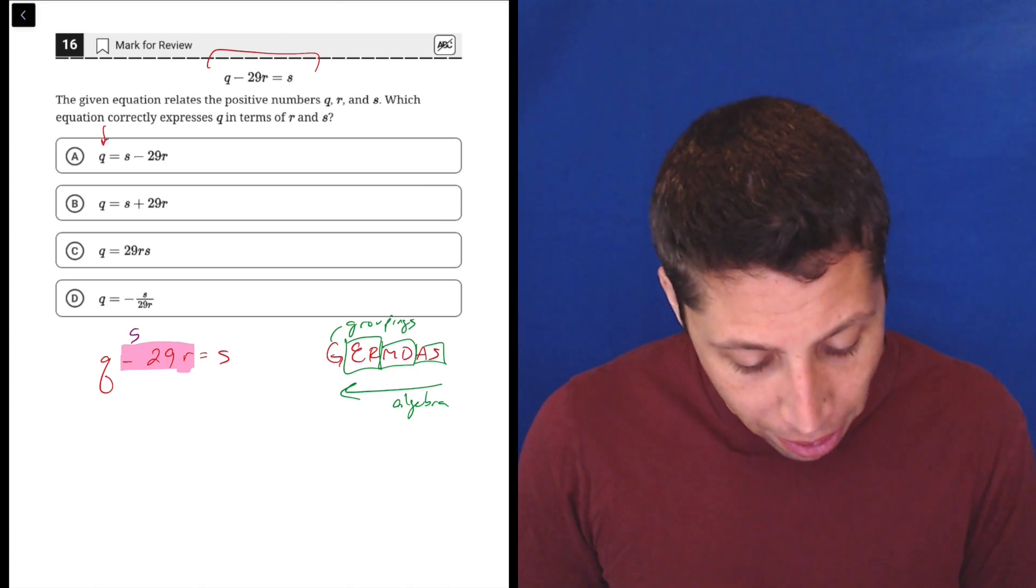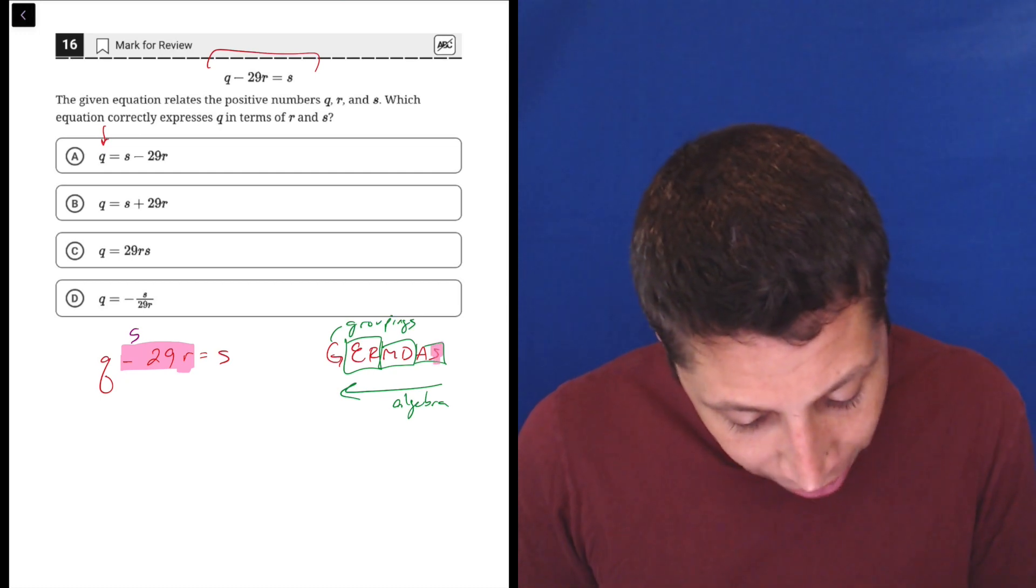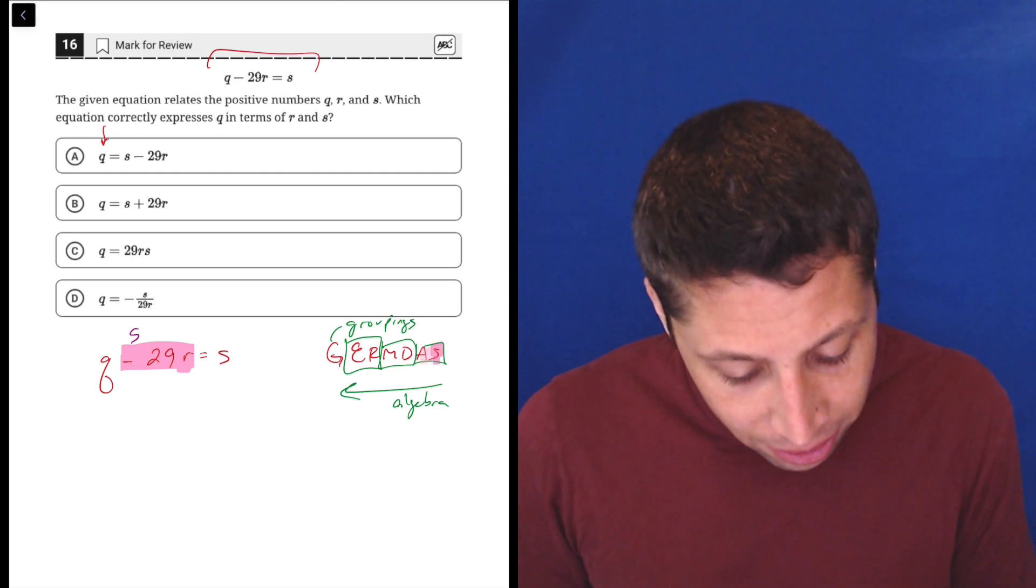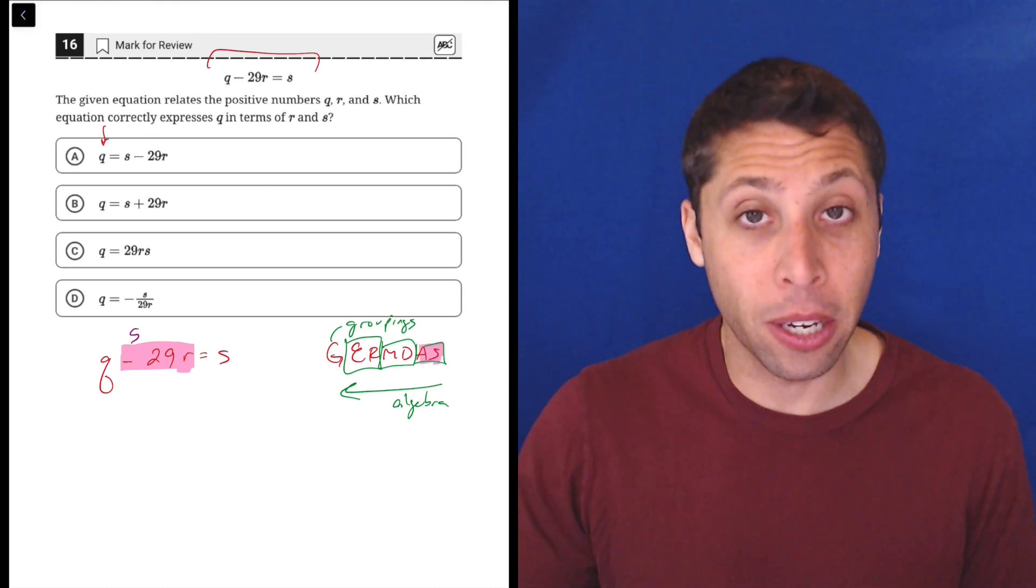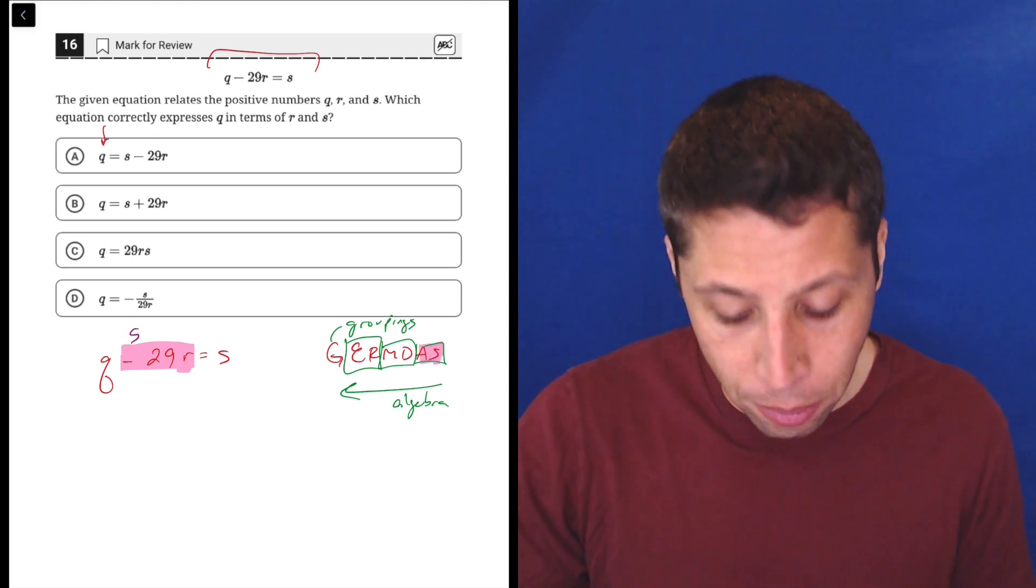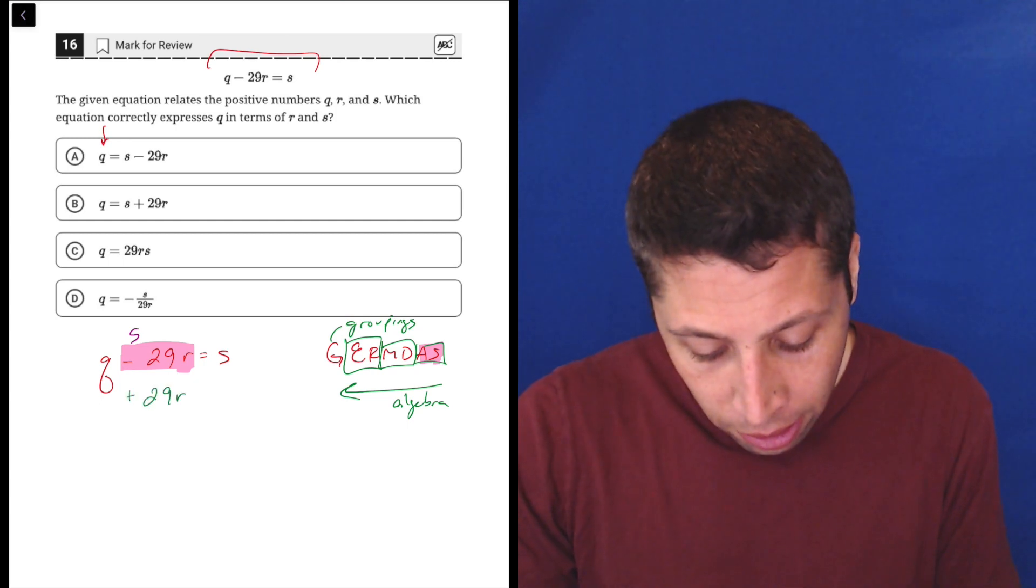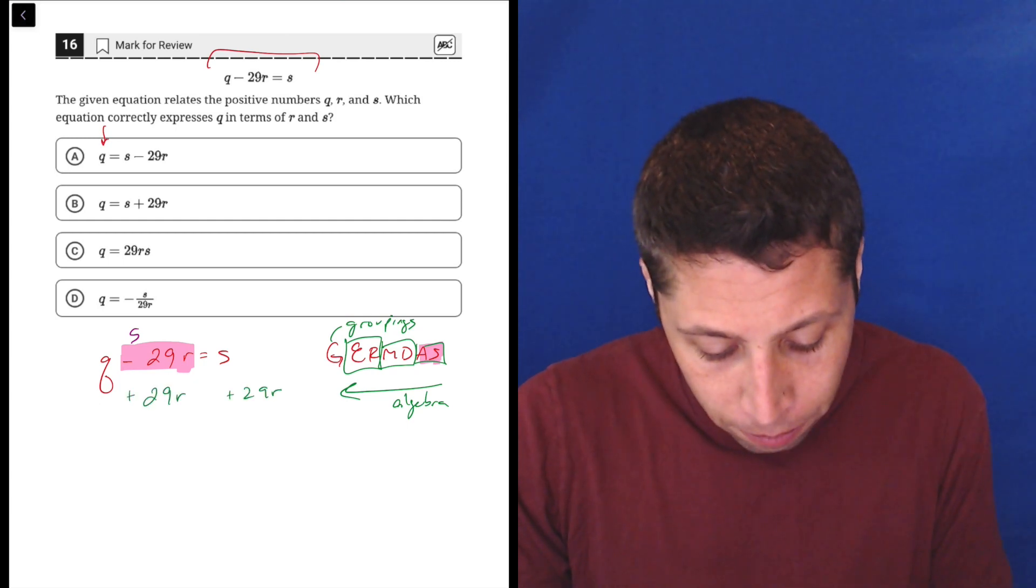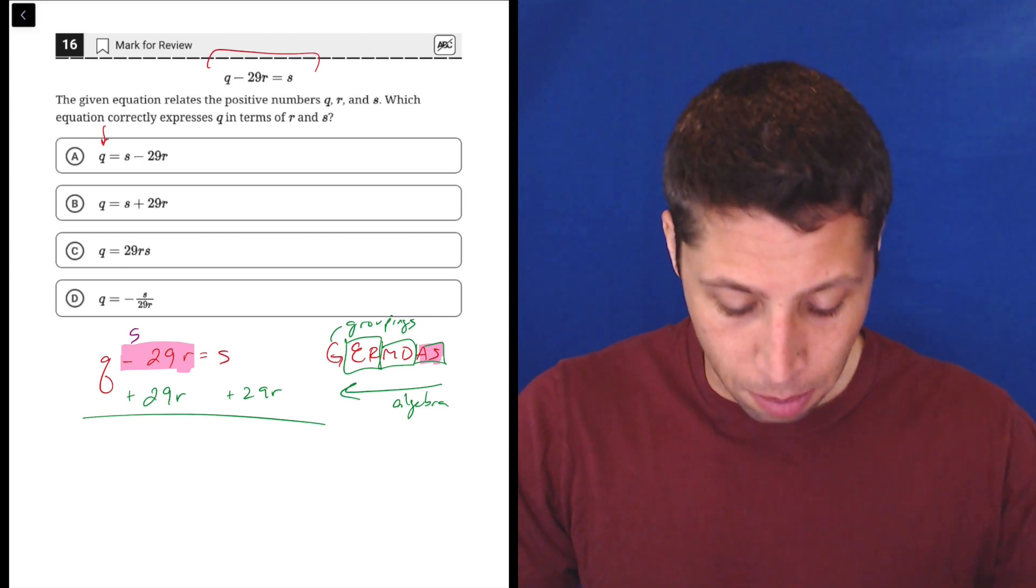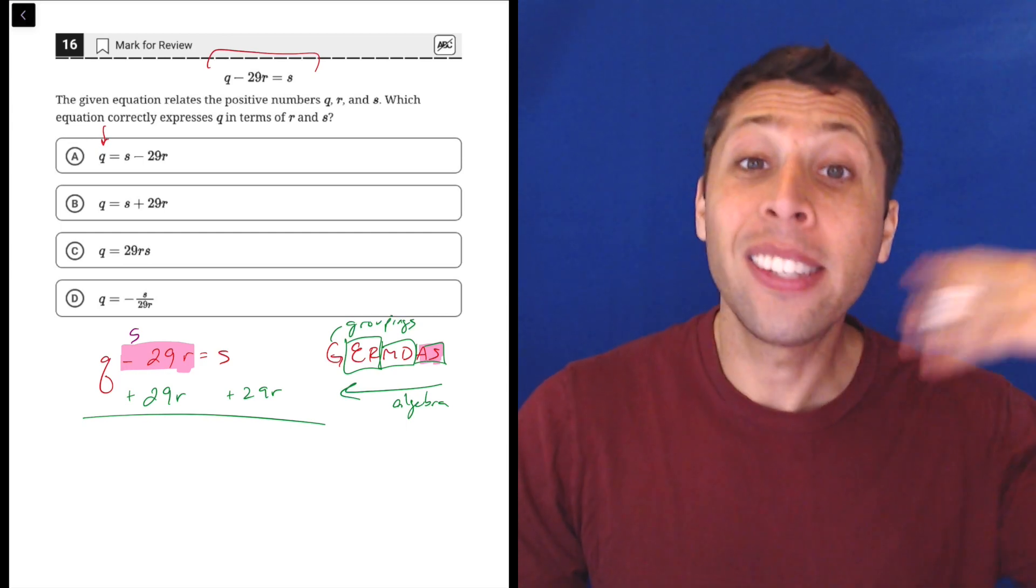So if I'm thinking about subtraction, then I really need to think about the entire box: addition and subtraction. Because in order to make subtraction go away with algebra, we use in this case addition to cancel it out. Negative 29R plus 29R is zero.